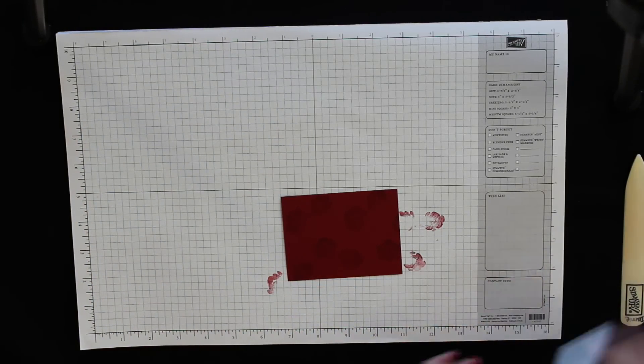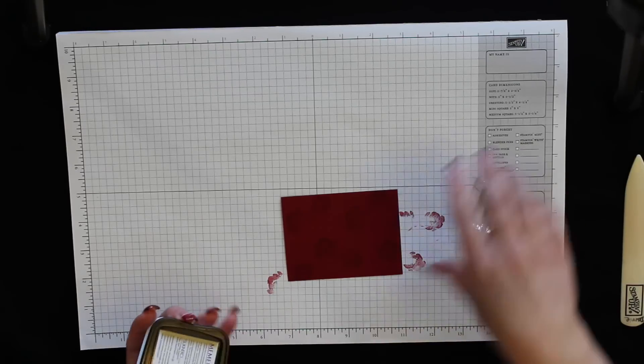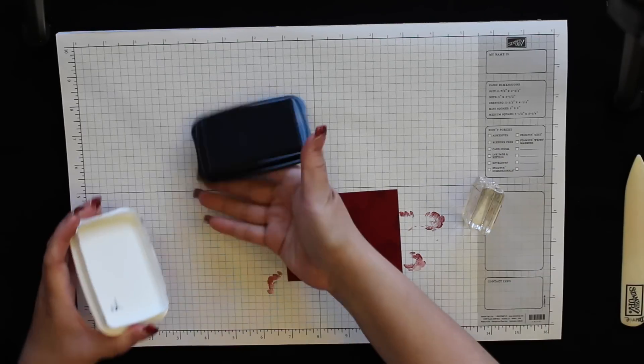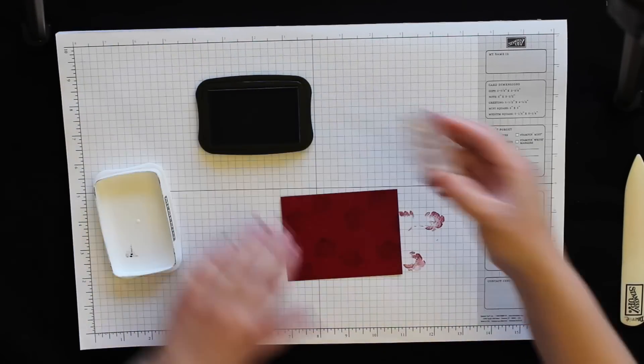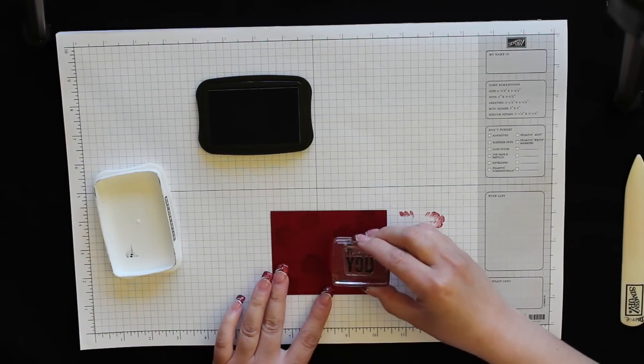And the last thing I'm going to do is stamp my sentiment, the thank you, again in the Tuxedo Black ink. And I'm going to center it along the right side because the flower is going to go right here.